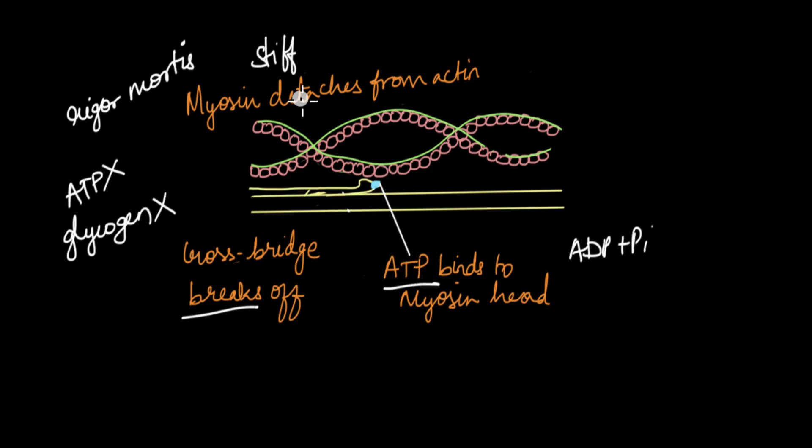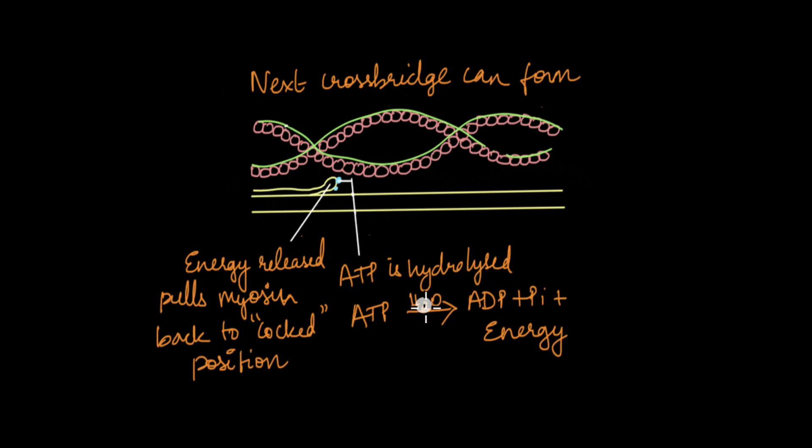And as ATP binds to myosin head and myosin detaches from actin, ATP is hydrolyzed to give ADP and inorganic phosphate. One more thing that is released during this process very importantly is energy. This energy that is released is what brings this myosin head to its cocked position.